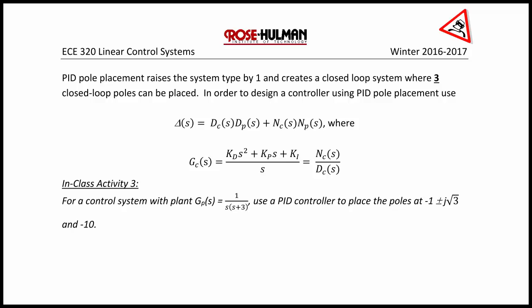where gc of s is kd s squared plus kp s plus ki over s, which is the numerator of the controller over the denominator of the controller.